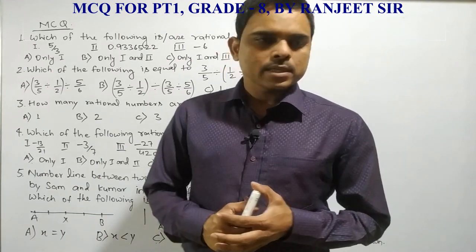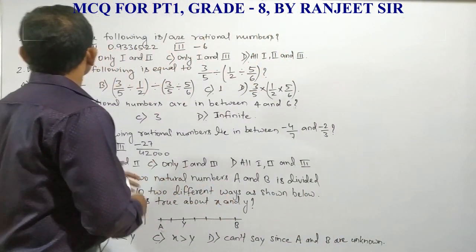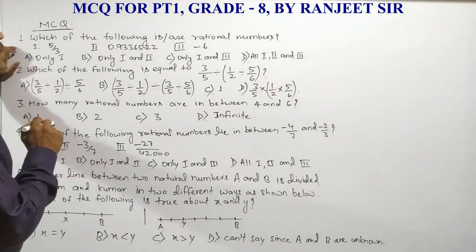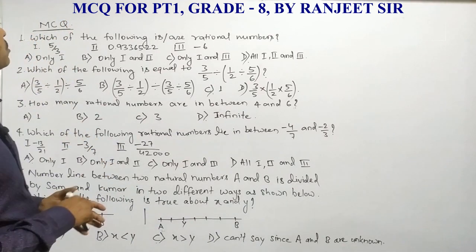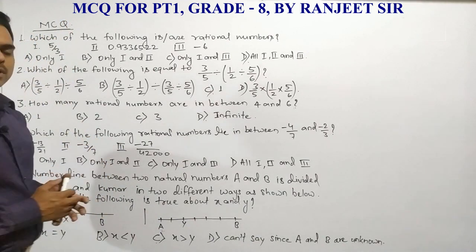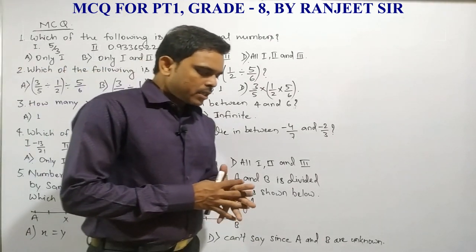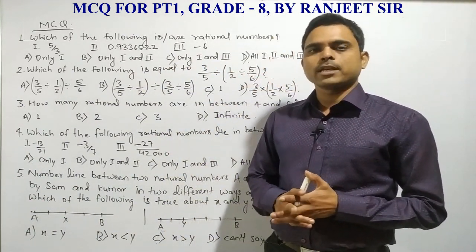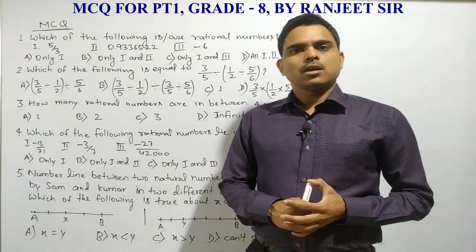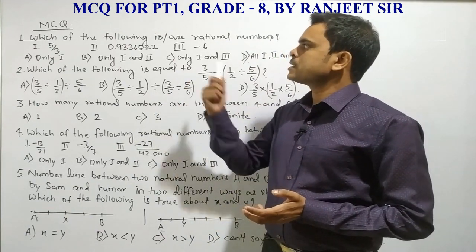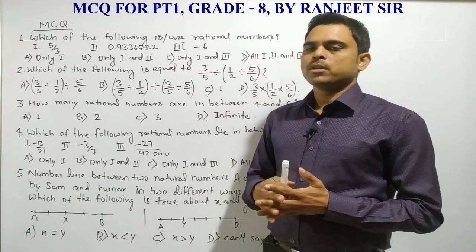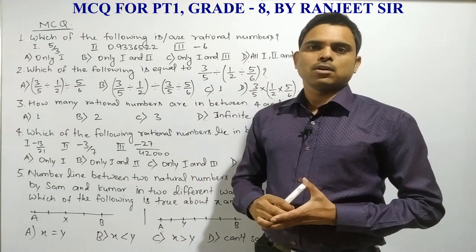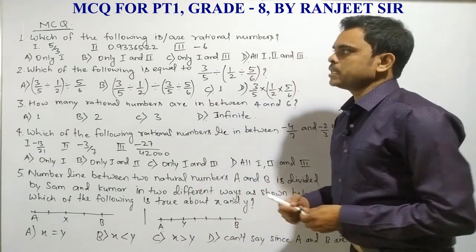I start with question number one: which of the following is a rational number? This is directly related to the definition or introduction of rational numbers, and from there we can get the idea about which one is a rational number. So 5/3 — the definition says that the P/Q form should be there for recognizing a rational number.